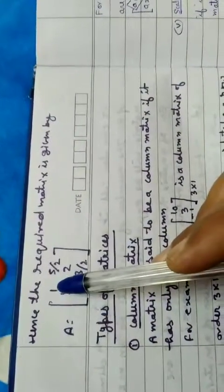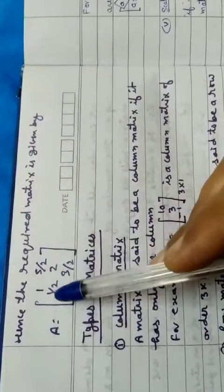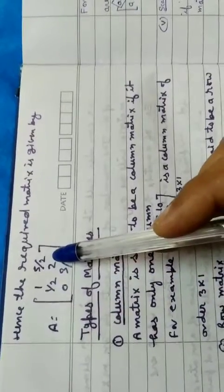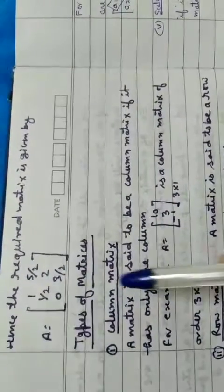Hence the required matrix is given by A is equal to: first row 1, 5/2; second row 1/2, 2; third row 0, 3/2.